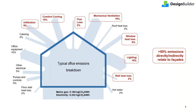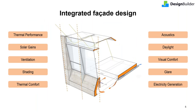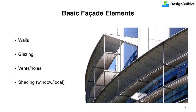The reason facades are a vital component in building performance is that in a typical building more than 50% of energy use can be attributed to various performance aspects of facades. For an integrated facade design, various interrelated performance aspects need to be managed: energy, thermal comfort, visual comfort, daylighting, glare, shading, ventilation, and energy generation. To deliver these performance aspects there are various elements used in building facades. Basic facades typically contain walls as the base opaque element, then various openings such as glazing, vents, or holes, and finally shading — either projections on the window or facade, or elements placed directly on the opening such as blinds.